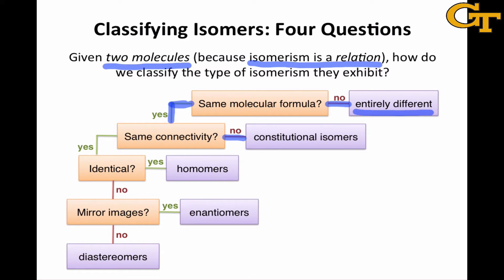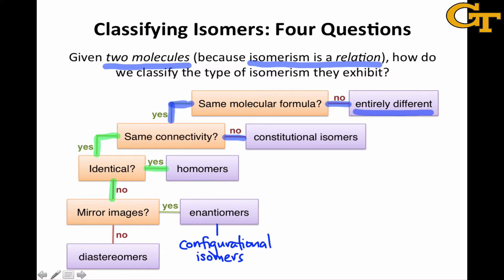But what if the molecules have the same connectivity? Does that mean they are necessarily identical? They can be, and if the molecules are identical at all other levels of structure, we call them homomers. However, they can still differ in the positions of their atoms in space — the connections can all be the same, but the orientations of the atoms with respect to one another can be different. In that case, the molecules differ at the level of configuration. There are two different types of configurational isomers: enantiomers and diastereomers. You'll also hear these referred to as stereoisomers since they differ in their stereochemistry.